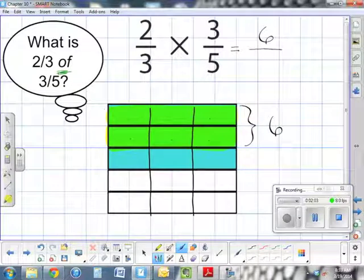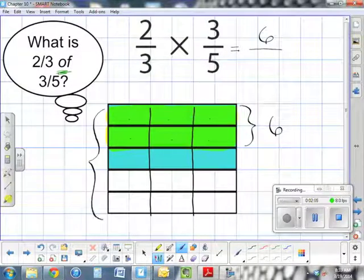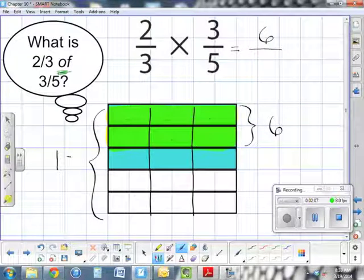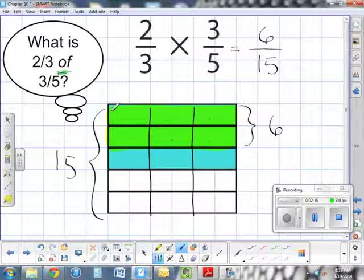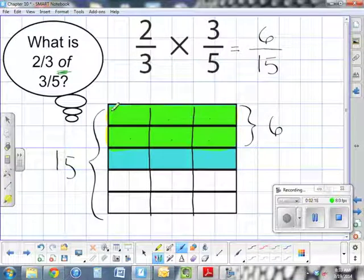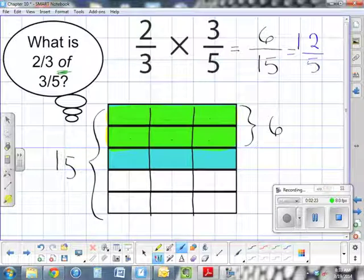In other words, two times three gives us six. The total number of partitions is fifteen, because that's the total. So my answer is six-fifteenths. In simplest form, six-fifteenths gives us two-fifths.